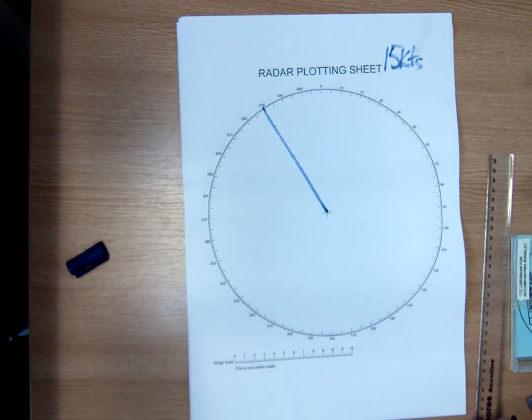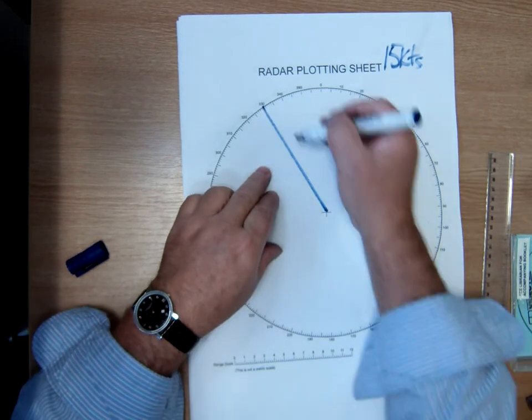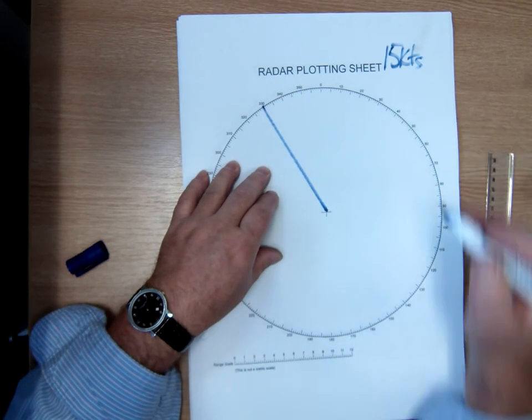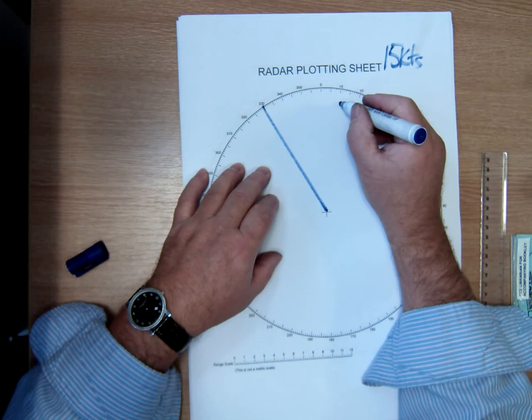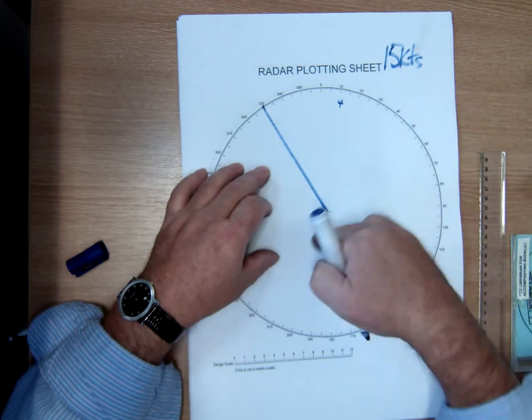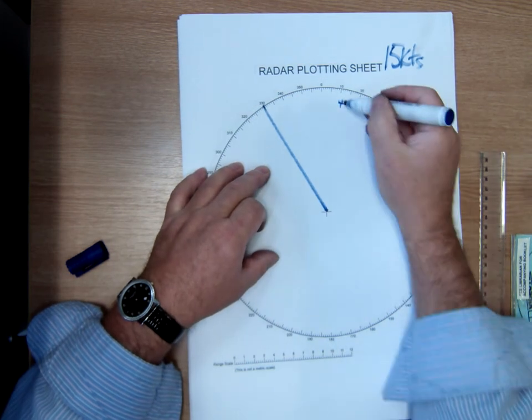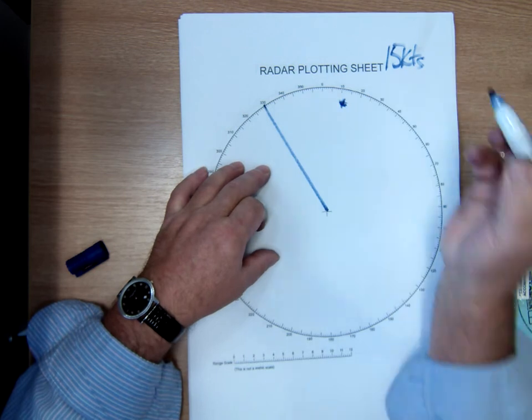Okay, so we're heading at 330, doing 15 knots. We have this target here on the starboard side, and this is the 12-mile range. I've got a target here.